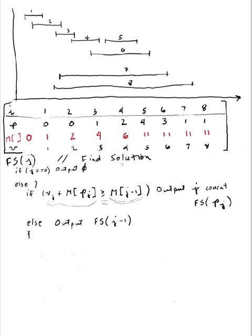So let's trace through this and see what is our solution for our set of intervals 1 through 8. I call this thing with FS of 8. J is obviously not 0, so now I have to ask the question: is V of 8, which is 8, plus M of P of 8... P of 8 is 1, so M of 1 is 1, so that's plus 1. Is it greater than or equal to M of 8 minus 1, which is 7? It's 11. The answer is no. So that means I'm not going to output anything. I will output the result of FS of 8 minus 1, so I call FS of 7. What this means is that 8 is not included in the optimal set.